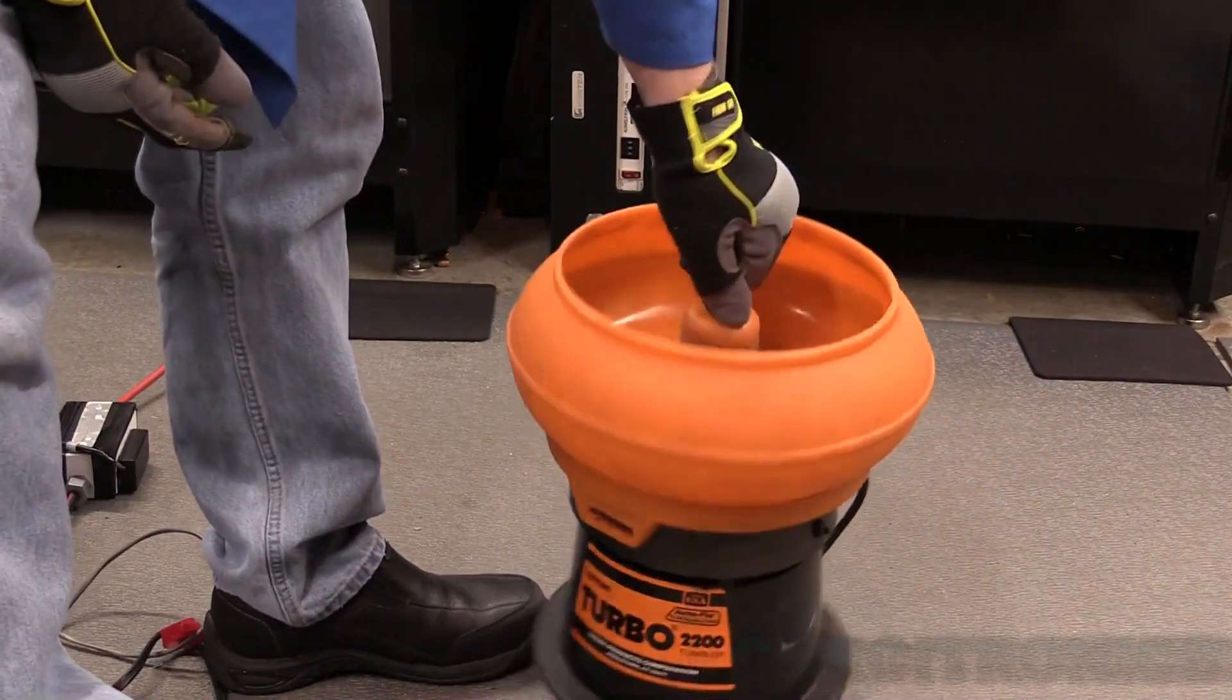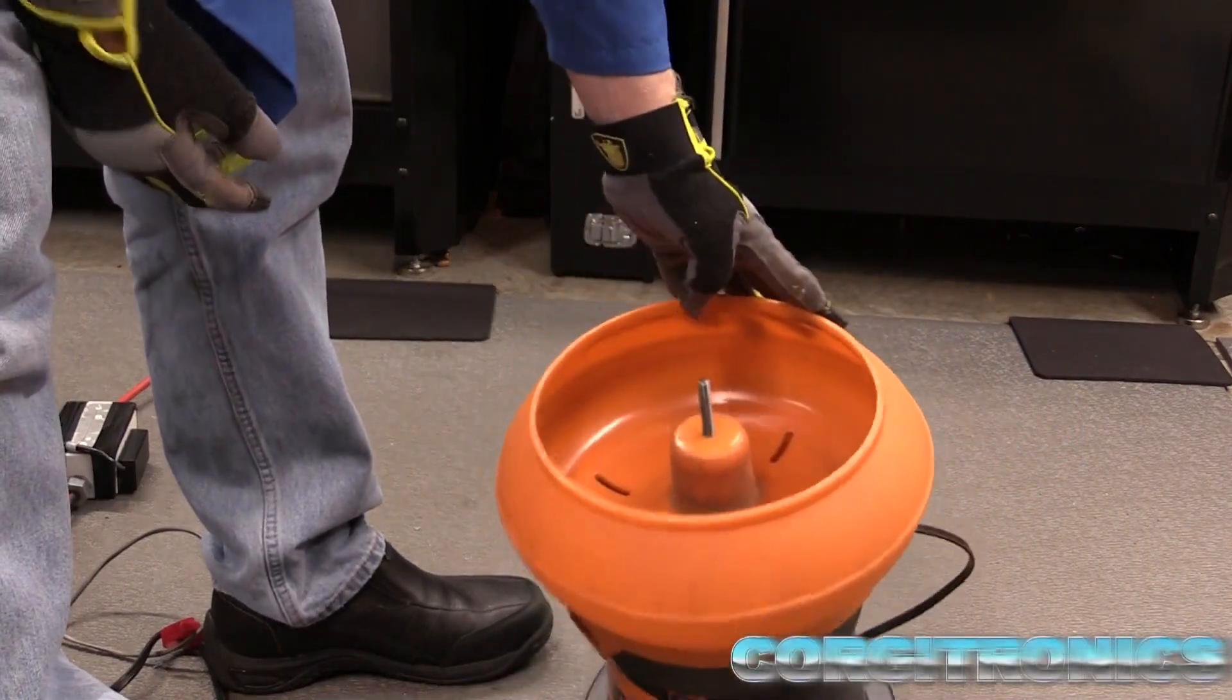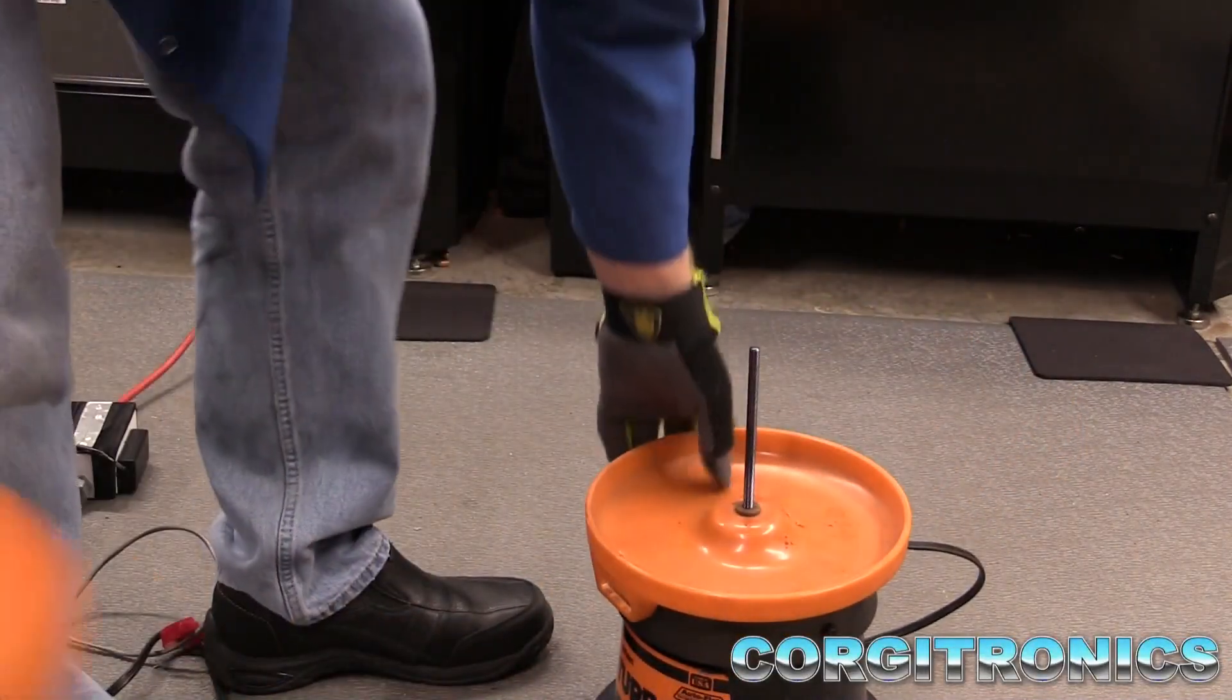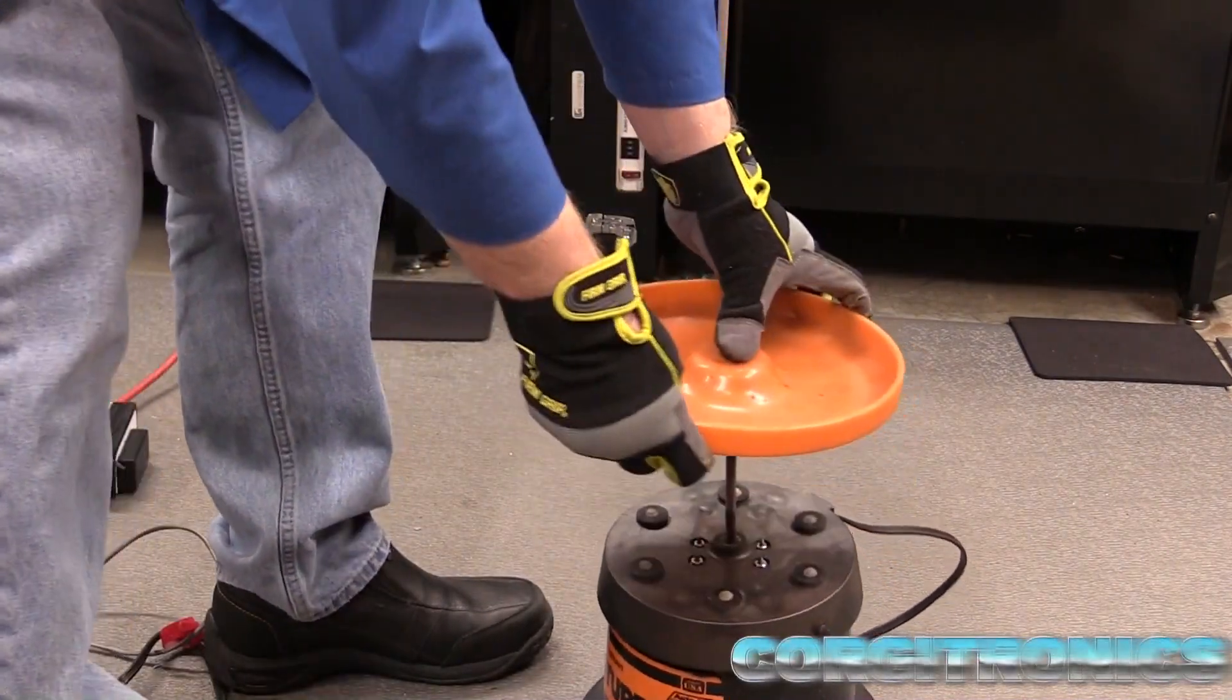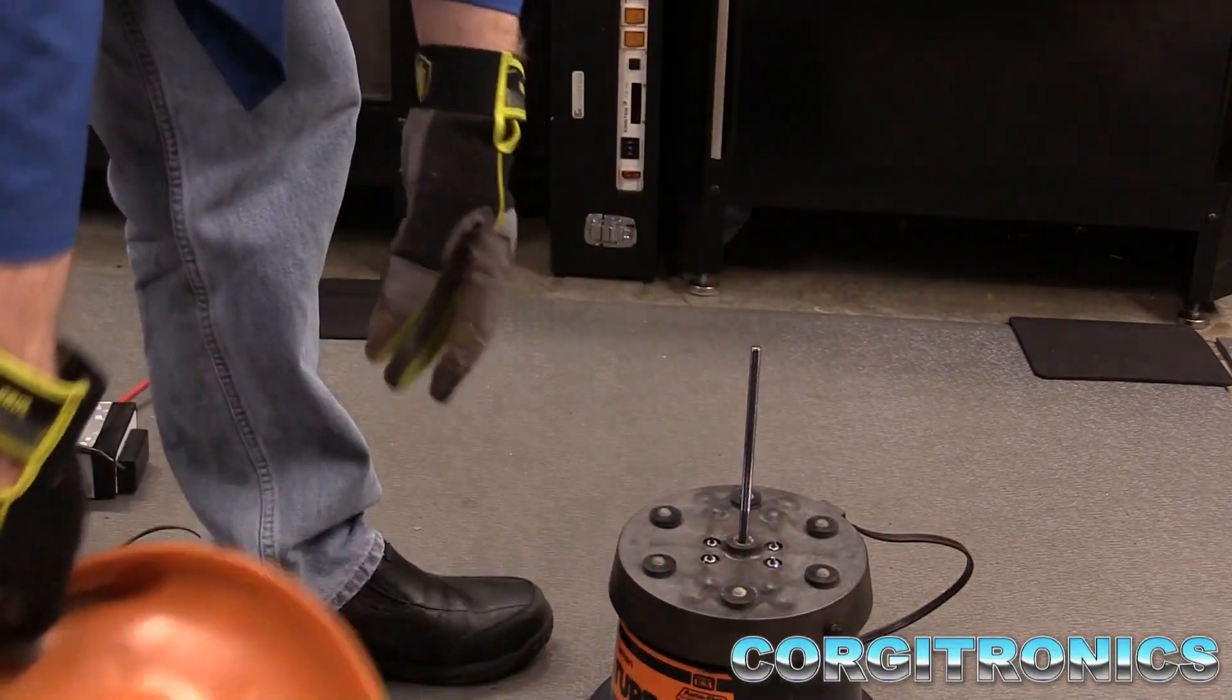To get started, we just need to remove the bins from the tumbler. In this case, it's an auto flow, so you got to take off that piece.